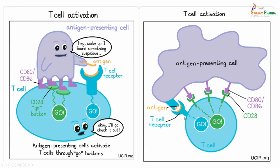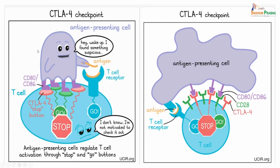Now let us look at a stop signal. We saw that CD28 was a go signal. To counteract this, there is a stop signal called CTLA4. Here there is an antigen presenting cell presenting the antigen to the T cell - it says, hey wake up, I found something suspicious. But what happens is the T cell has the CTLA4, and the CTLA4 has now bound to the CD86. When the CTLA4 binds to CD86, there is a stop signal, which means the T cells are not able to elicit a response. The T cell says, I am not motivated enough to go and check out.